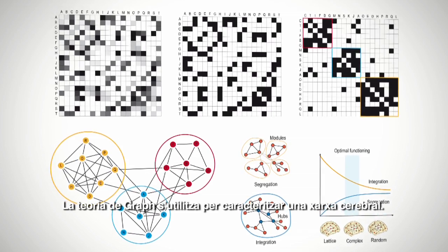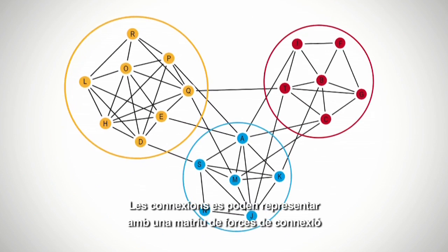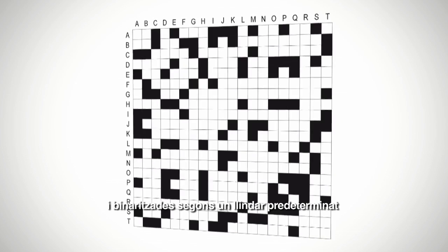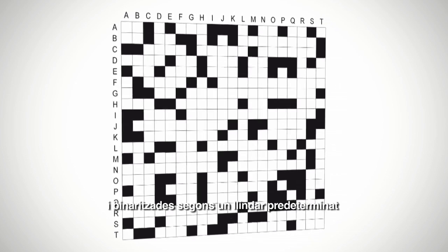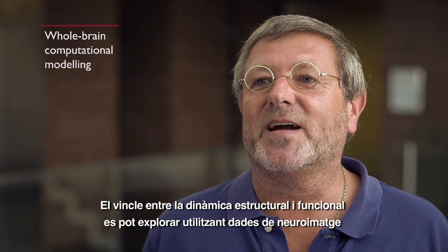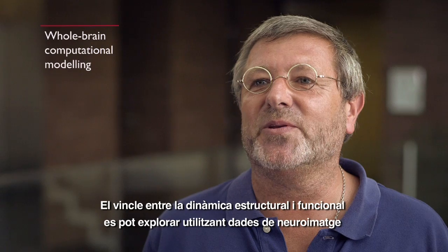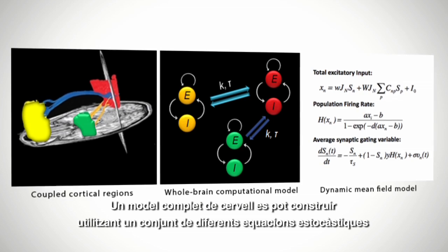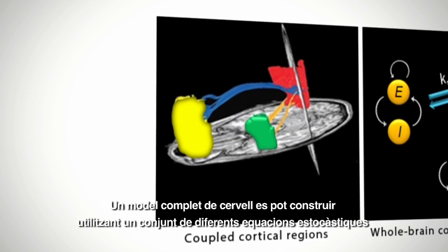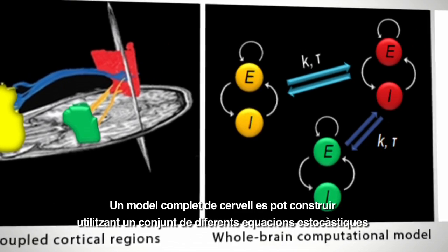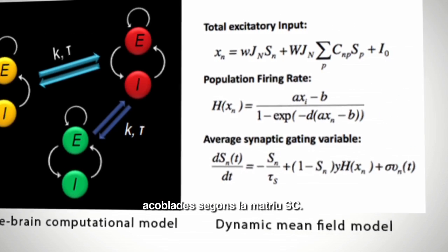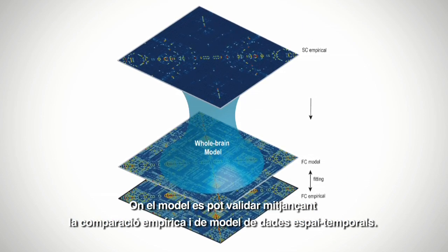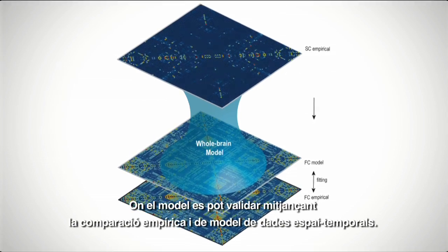Graph theory can be used to characterize a brain network. The connections can be represented with the matrix of connection strength and binarized at a given threshold. The linkage between structural and functional dynamics can be explored using whole brain computational modelling of neural imaging data. A whole brain model can be constructed using a set of stochastic differential equations coupled according to the SC matrix, where the model can be validated by comparing model and empirical spatiotemporal data.